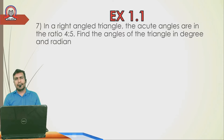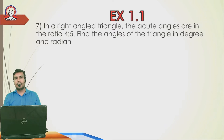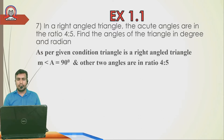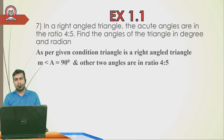Next: Exercise 1.1, Question 7. 'In a right-angle triangle, the acute angles are in the ratio 4:5.' In a right-angle triangle, one angle is compulsory 90°, so Angle A = 90° is given directly. The remaining two acute angles are in the ratio 4:5.